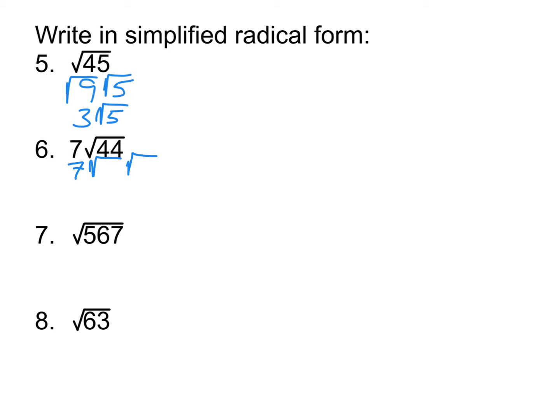And in this case, the perfect square that goes into 44 is 4, and then that's 4 times 11. So then this becomes 7 times 2 root 11. And then we do the 7 times 2, so your final answer here is going to be 14 root 11.